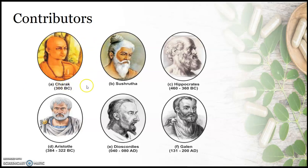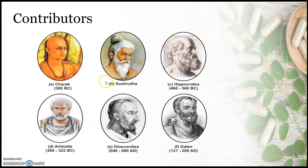Two contributors are from India: Charak and Sushruta. Charak did enormous work in anatomic physiology and categorized medicinal plants into different categories depending upon disease conditions. He wrote a book — the materia medica — and gave medicinal preparations utilized for treatment of different diseases.